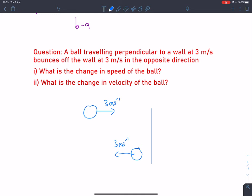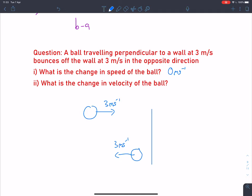Part one: what is the change in speed of the ball? Speed is a scalar, so in the context of this question, the speed has not changed. It started at 3 metres per second and finished at 3 metres per second, so we have zero change in speed.